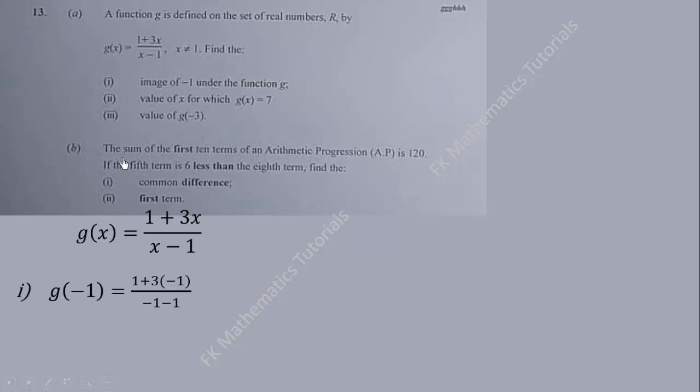So wherever we see x, replace x with -1. That is what we have done here. We need to evaluate this on the right-hand side: 3 times -1 is -3, so we get (1 - 3)/(-2). 1 - 3 is -2 over -2, which gives us 1.